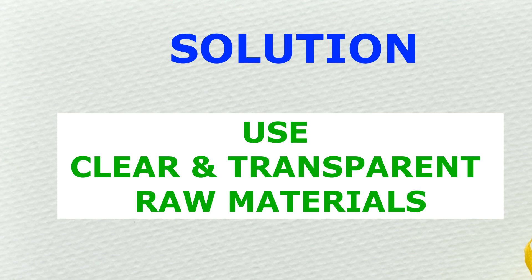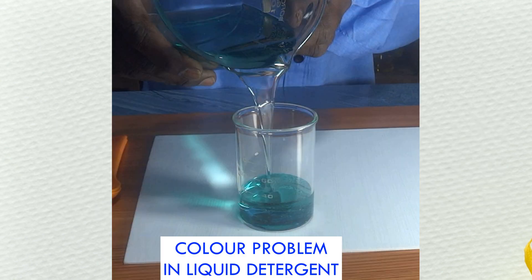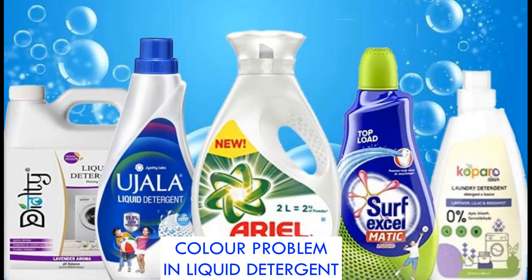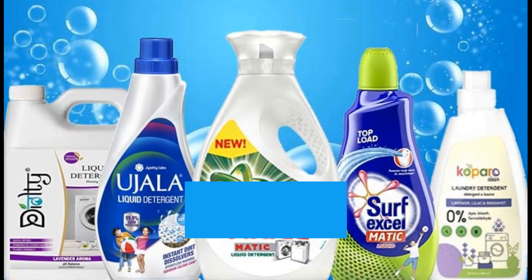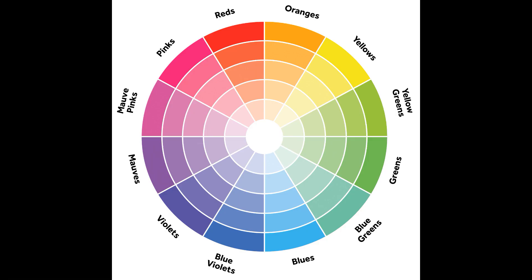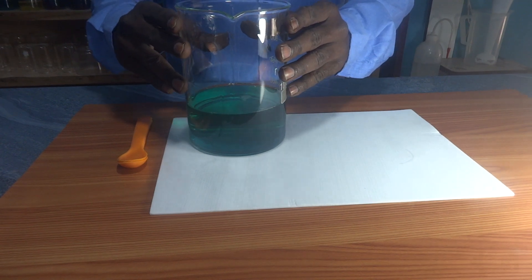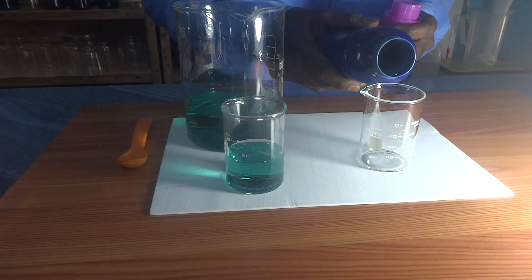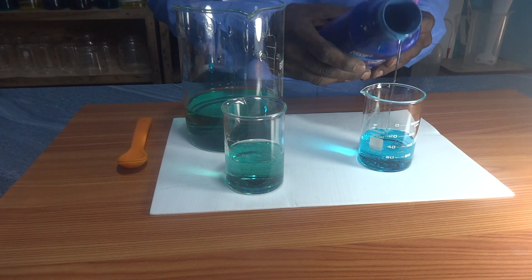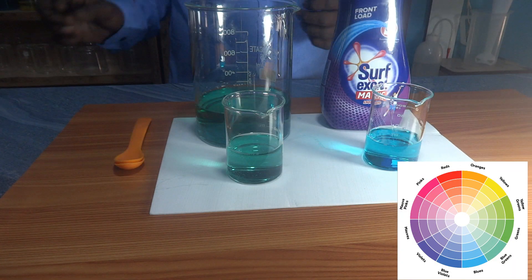Suppose we made a green color liquid detergent by mistake — how can we fix it? Generally, all branded liquid detergents are either violet or blue color. With the help of the color wheel we can convert our green color liquid detergent into either blue or violet. I have prepared a green color liquid detergent, and I prefer Surfax cell color, which is ocean blue. Referring to the color wheel, if I mix violet color with green color I will get the color in between — which is ocean blue, or Surfax cell color.